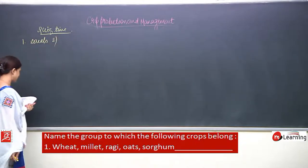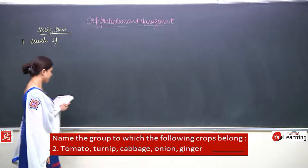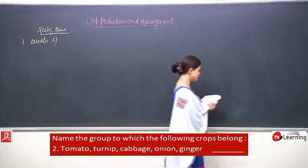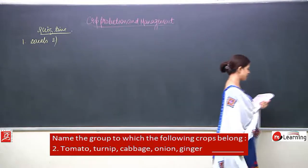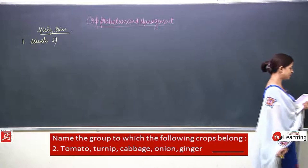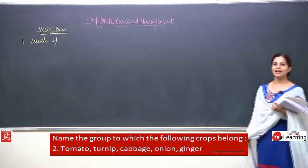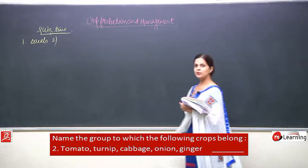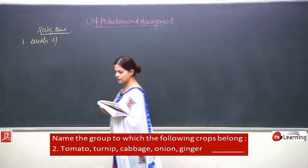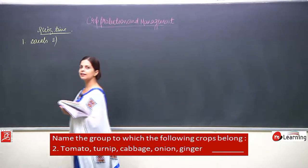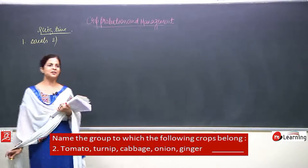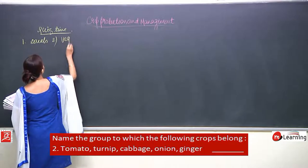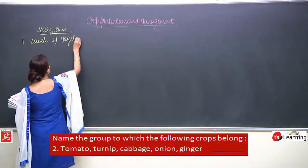Coming to the second one, this one is quite easy. Tomato, cabbage, turnip, onion and ginger — I know you all know it — these are vegetables.